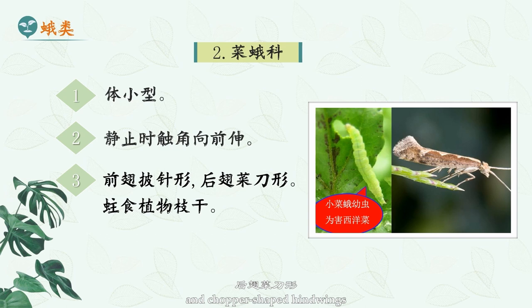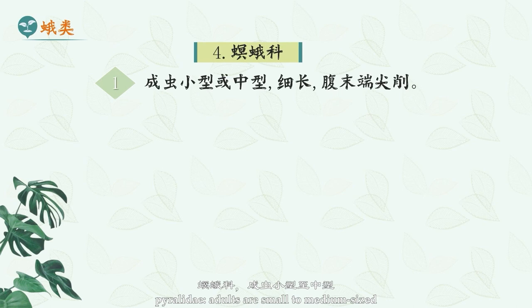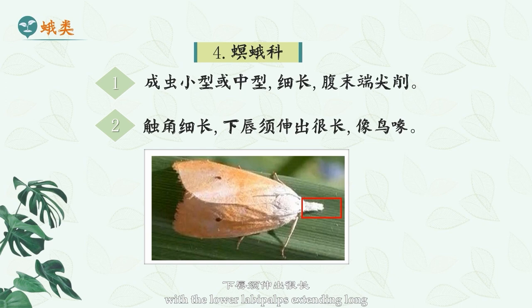Tortricidae: forewings are slightly rectangular and have mottled markings. When motionless, both wings are closed in a bell shape. Pyralidae: adults are small to medium-sized with long, slender bodies and pointed ventral ends. The antennae are slender and filiform, with the lower labial palps extending long like a bird's beak.